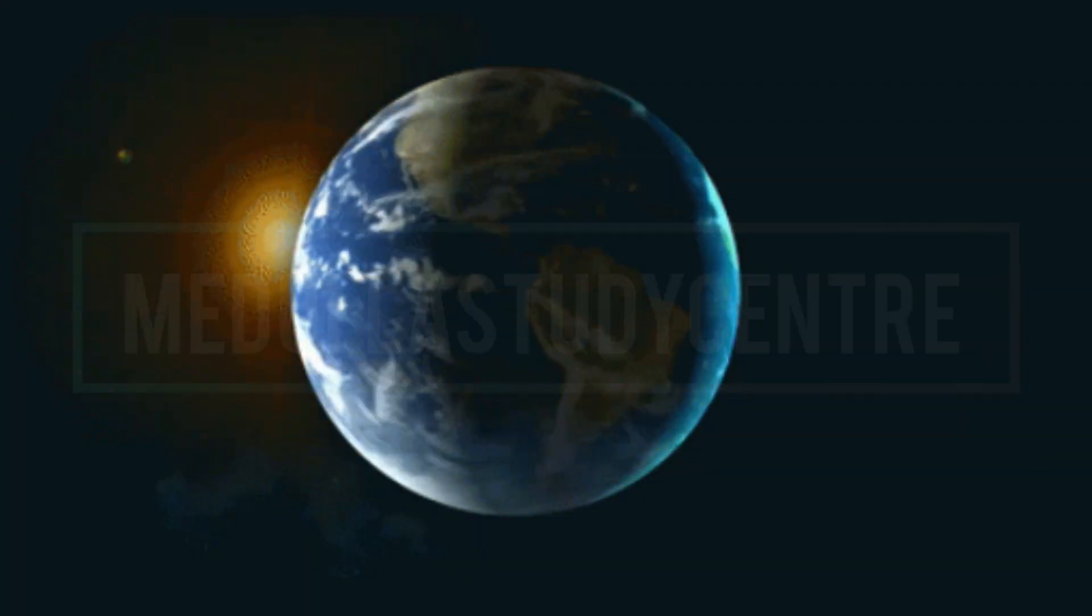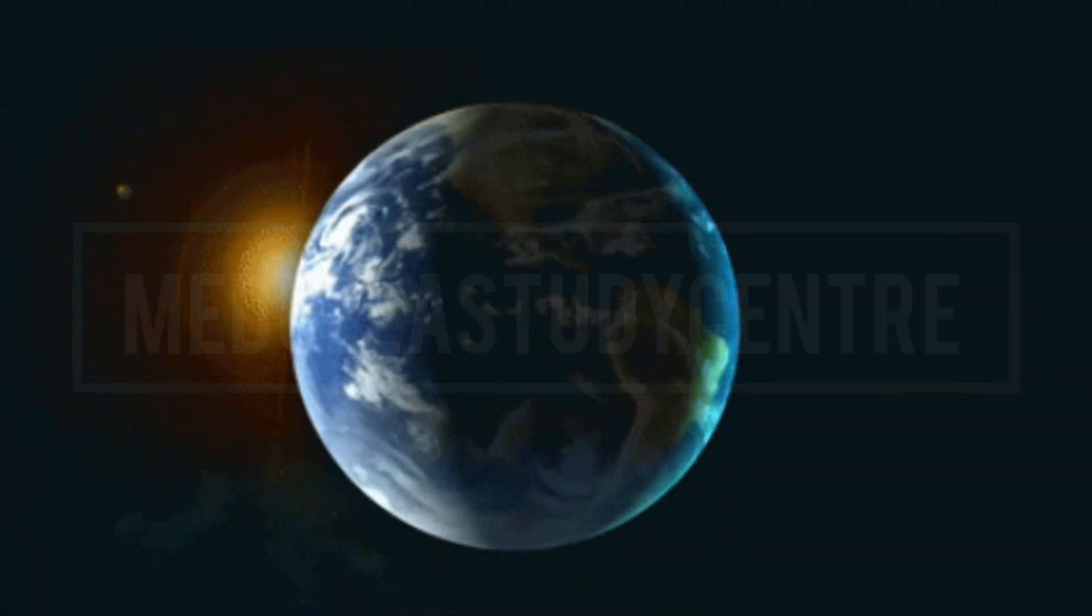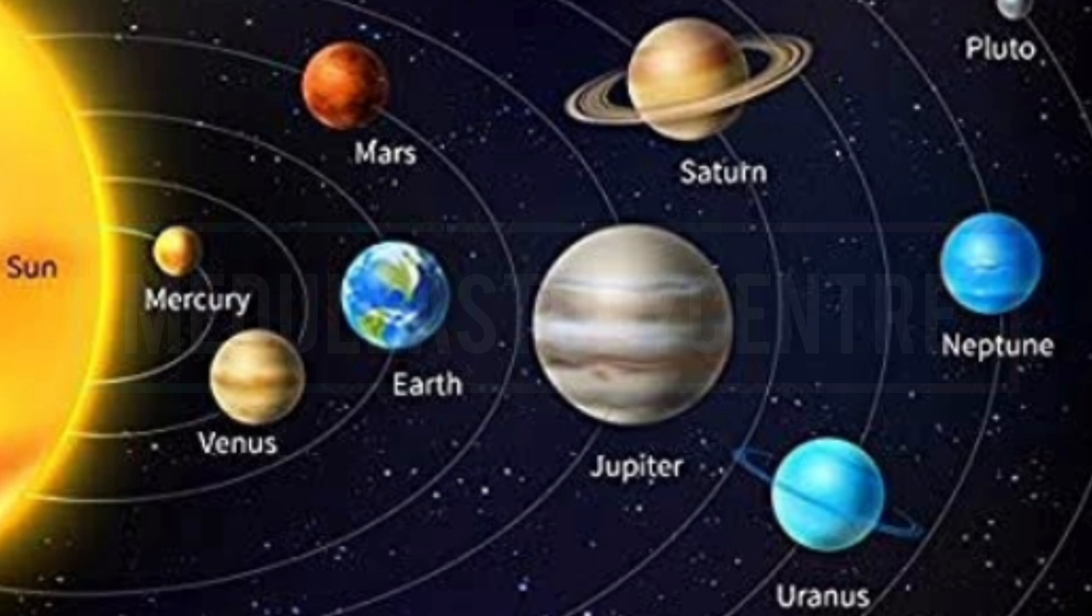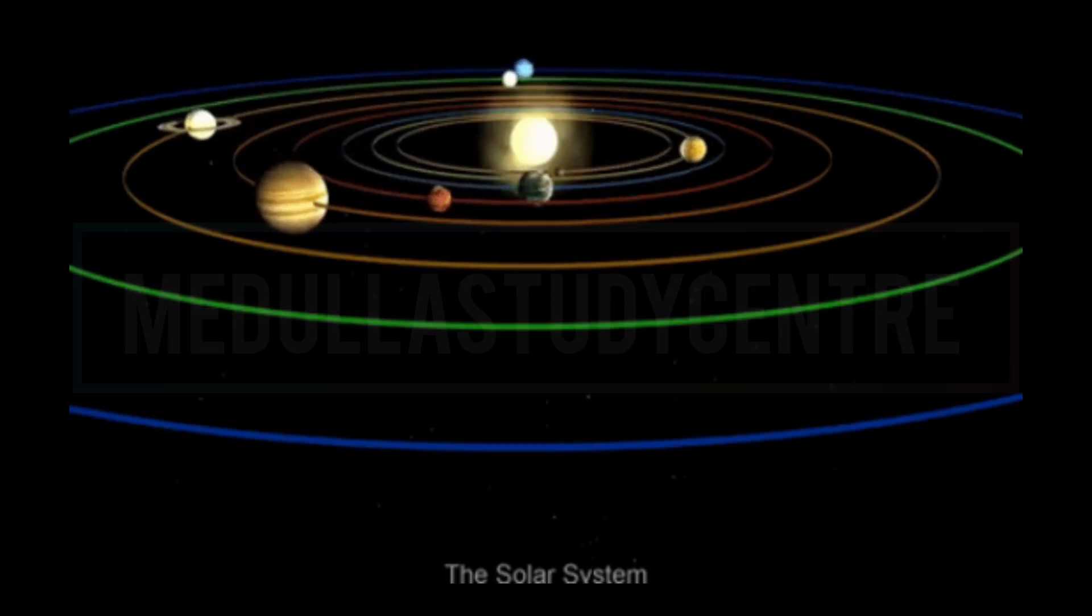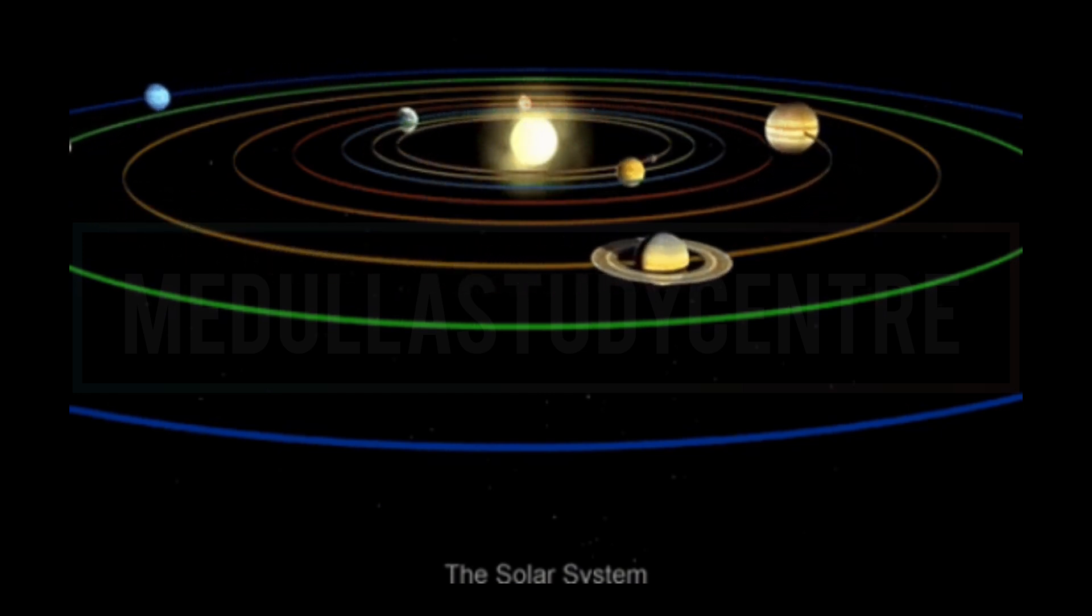Our Earth. In the previous video, we have already learned that our Earth is the third planet from the Sun and it is the only planet in the solar system where life exists. There is no other planet where life is possible.